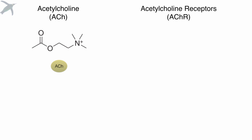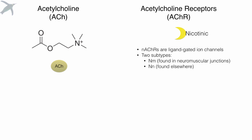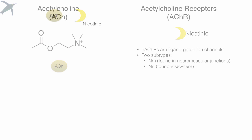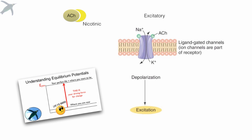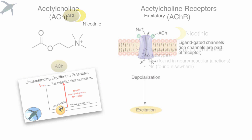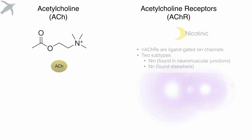Let's start with acetylcholine. Here's the actual structure, what it looks like, and we're going to look at the receptors that acetylcholine can bind to. The first are the nicotinic receptors. There are actually two subtypes; the only real difference is where they are in the body. When acetylcholine binds to a nicotinic receptor, the response is always excitatory. Acetylcholine binds to this receptor, which is itself an ion channel, and it allows sodium and potassium to move in the directions that they want to go. Sodium floods in, potassium trickles out, and the effect is excitation.